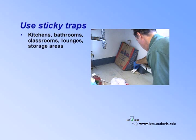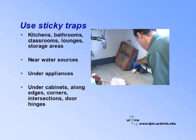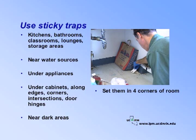Place sticky traps indoors in kitchens, bathrooms, classrooms, lounges, and storage areas. Put them near sinks or other water sources, or under appliances such as refrigerators or dishwashers. Place traps under cabinets, along wall edges, corners, intersections, door hinges, and near dark areas where you find a lot of clutter. Set them at each of the four corners of the room to give you an idea where roaches are entering. Replace traps regularly as they accumulate roaches or debris.